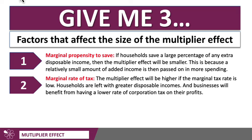The second factor is the marginal rate of tax. The multiplier effect will be higher if the marginal tax rate is lower, because when people are given an increase in incomes, if the tax rate is low, households are left with greater disposable incomes. And businesses too may benefit from having a lower rate of corporation tax on their profits.